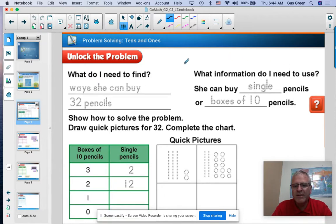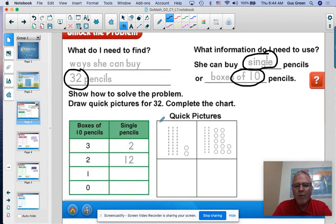So this particular problem is that a second grader wants to buy some pencils, and you can buy boxes of pencils or single pencils. Now, this second grader wants to buy 32 pencils, and she could buy them one at a time, singles or ones, or she could buy a box of 10. And so we're trying to think of all the different ways that you could purchase pencils using boxes of 10s and singles and still get 32.